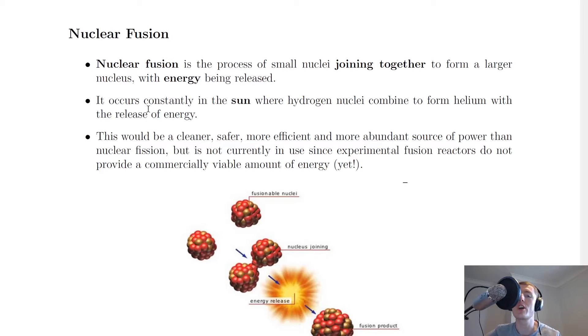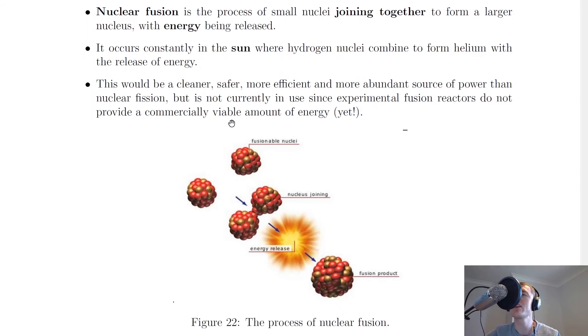Going back to the notes now, it says that nuclear fusion occurs constantly in the sun where hydrogen nuclei combine to form helium with the release of energy. In the core of the sun you've got all this hydrogen which is fusing together through nuclear fusion to form helium with the release of energy.